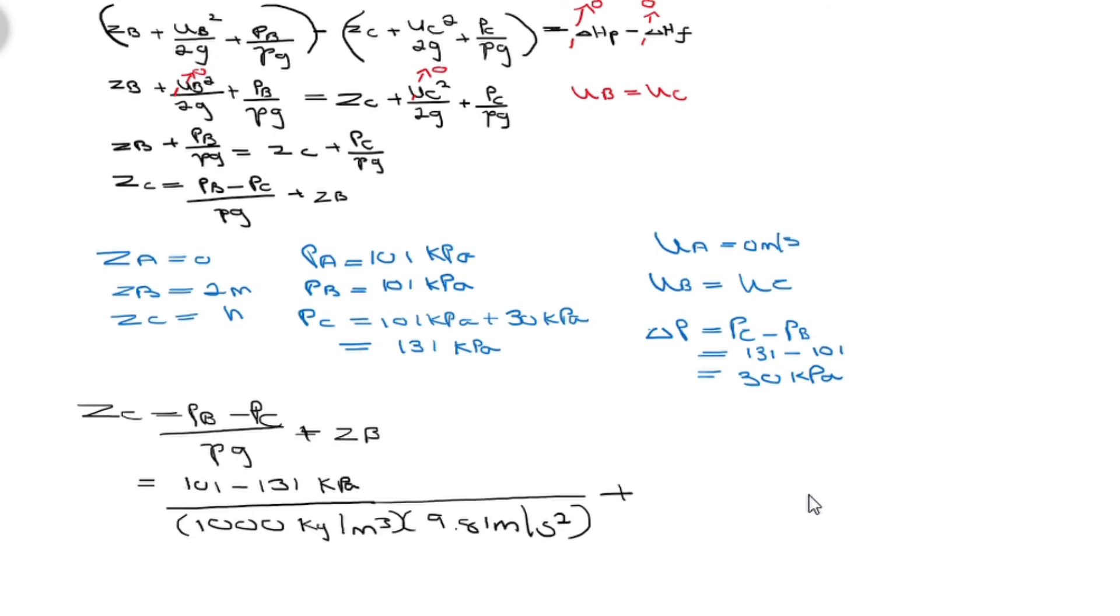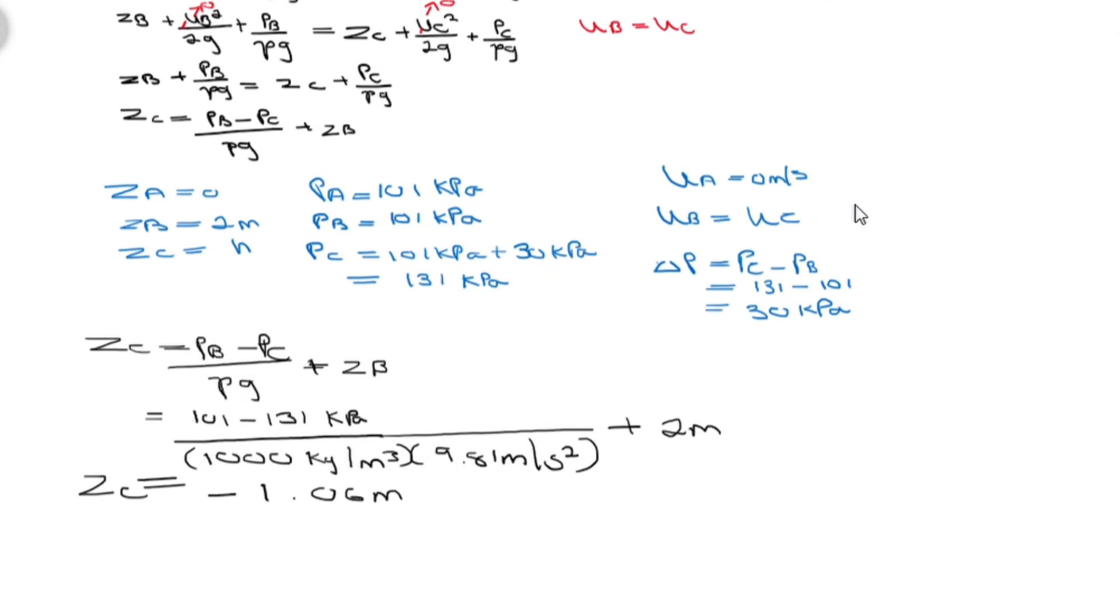If you punch this into your calculator you should get negative 1.06 meters. So the actual height is actually the reference point subtracting that which we just got there. The answer is 2.94 meters.